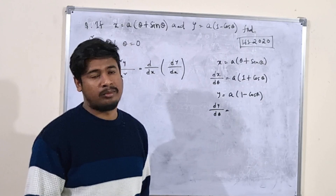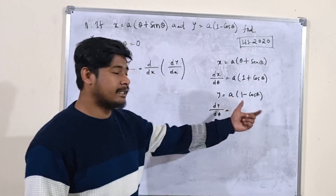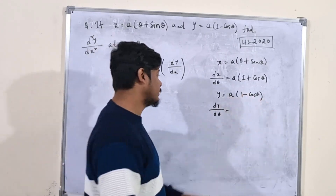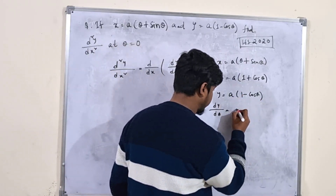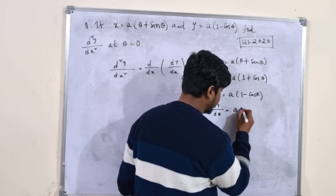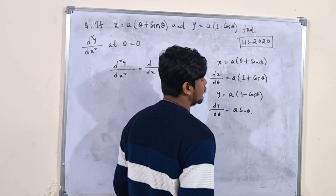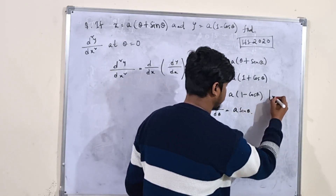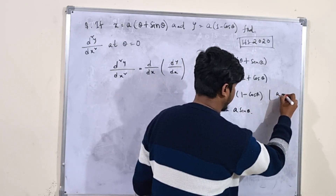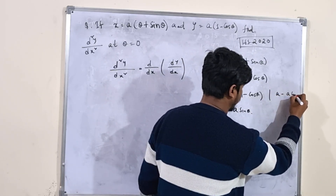So dy/dθ = a·sinθ, since minus times minus gives plus: dy/dθ = a·sinθ.